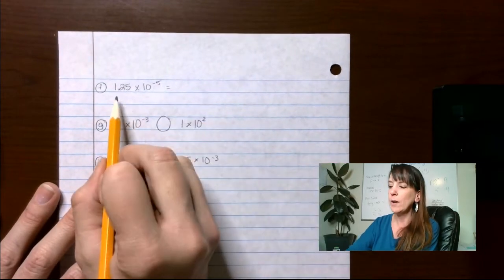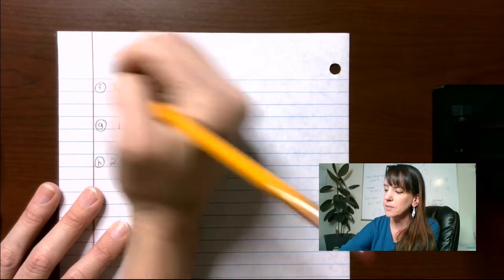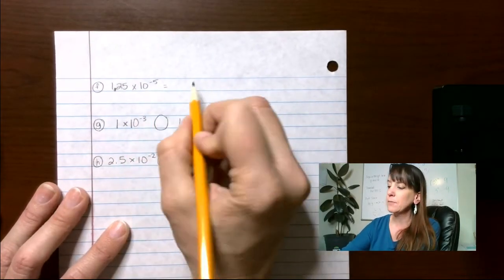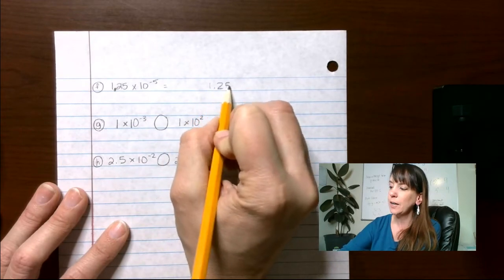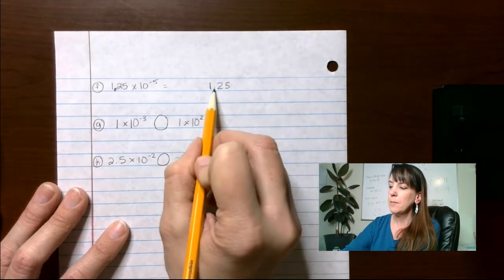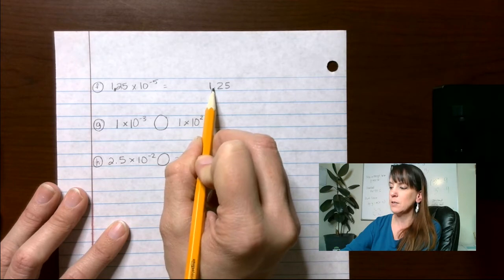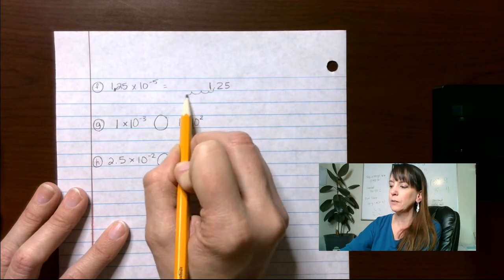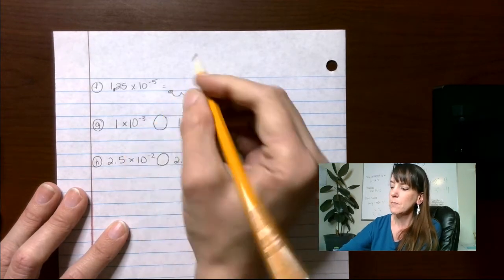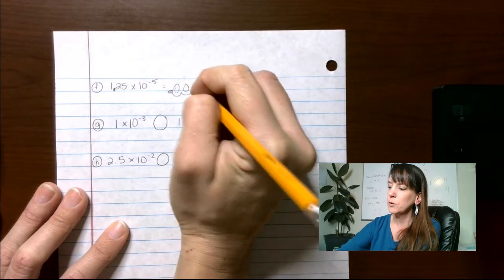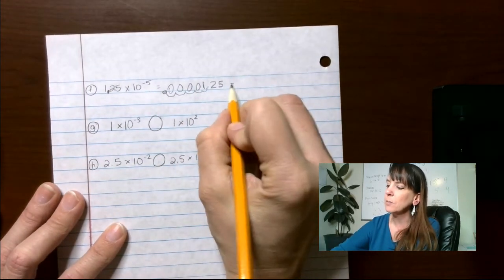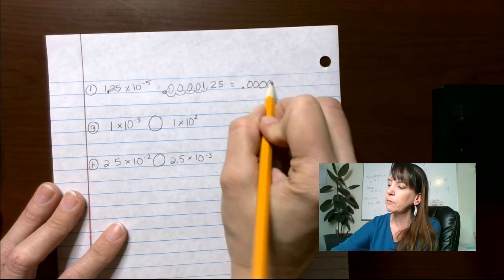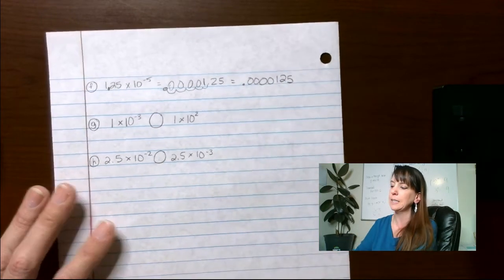So for F up here, 1.25 times 10 to the negative 5. So I'm going to take that 1.25 here and I'm going to move this over five spots. 1, 2, 3, 4, 5. So now I get 1, 2, 3, 4. That's kind of messy. So I'm going to rewrite it. 1, 2, 3, 4, 1, 25.